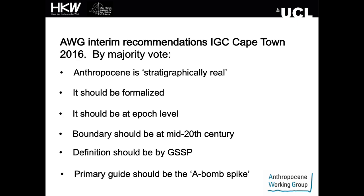After much research, debate and discussion, voting took place at the International Geological Congress in Cape Town 2016. By majority vote, the Anthropocene was recognised as stratigraphically real; it should be formalised at an epoch level; the boundary should be at the mid-20th century; the definition should be by a golden spike or GSSP; and the primary marker or guide should be the atom bomb spike.